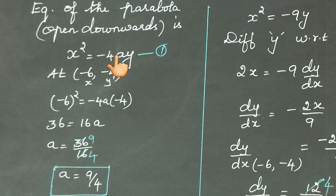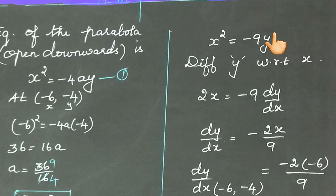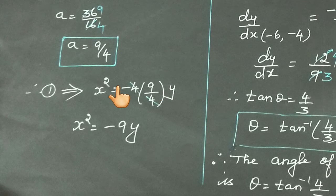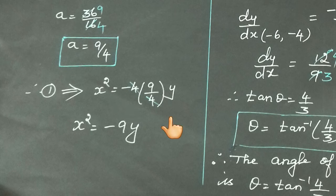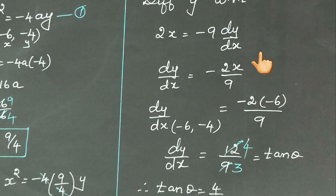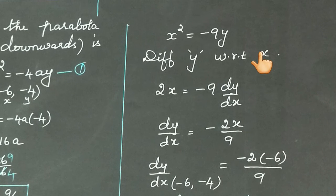Substituting the value of a = 9/4 into the equation: x² = −4 × (9/4) × y. Cancelling 4 and 4, we get x² = −9y.